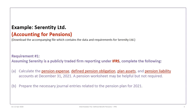This example is based on the Serenity Limited example, so please make sure that you download the correct file and that you've pre-read the information and you're ready to tackle it. We'll first start with requirements 1A and 1B. Assuming Serenity is a public company that reports under IFRS, we're going to calculate the pension expense, defined benefit obligation, the plan assets, and the pension liability accounts as at December 31st, 2021. We could also use a pension worksheet, so I will illustrate both ways — first with a pension worksheet, then with just calculating the account balances using T-accounts, so you can choose the approach that works best for you.